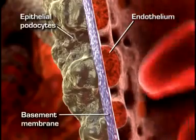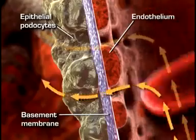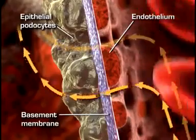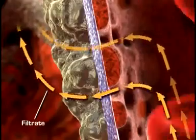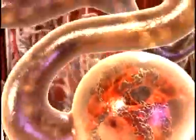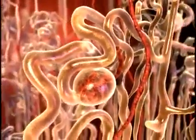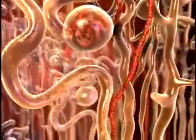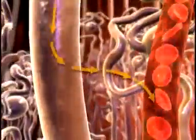This membrane allows some particles from the blood to pass through, but not all. The fluid filtered from the capillary blood into Bowman's space is called filtrate and forms the primary urine. The filtrate then diffuses across Bowman's space and into the tubule system of the nephron. In the tubules, some substances are added to the filtrate as part of urine formation, and some substances are reabsorbed out of the filtrate and back into the blood.